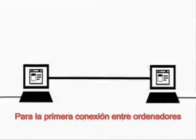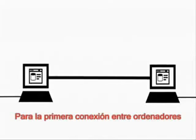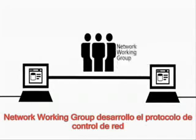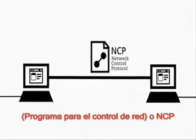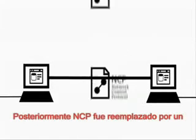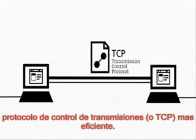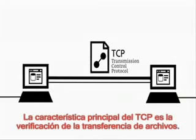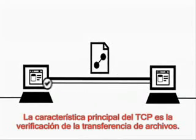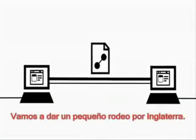For the first connections between the computers, the network working group developed the network control protocol. Later on, the NCP was replaced by the more efficient transmission control protocol. The specific feature of the TCP is the verification of the file transfer.